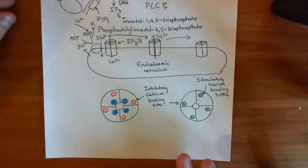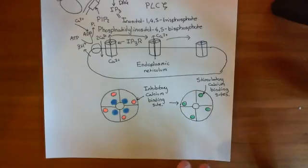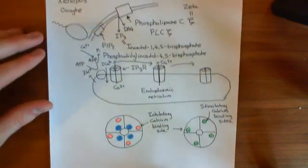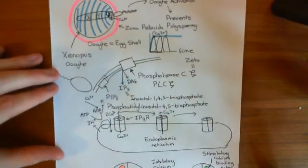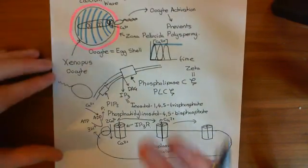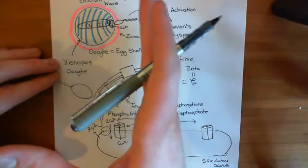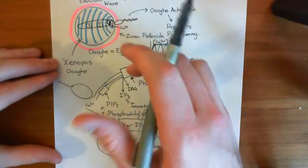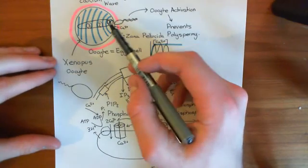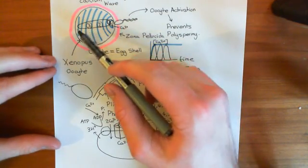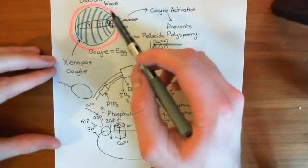Welcome back to this next video on oocyte activation and the involvement of calcium waves. We have seen how when the sperm touches the oocyte, what begins to happen is you propagate forward in the cytoplasm waves of calcium signaling.